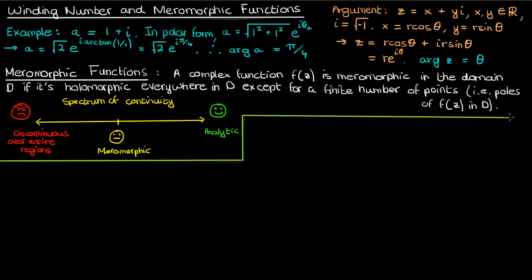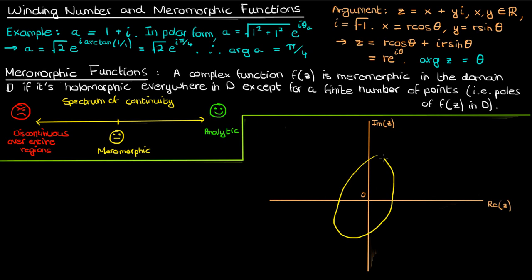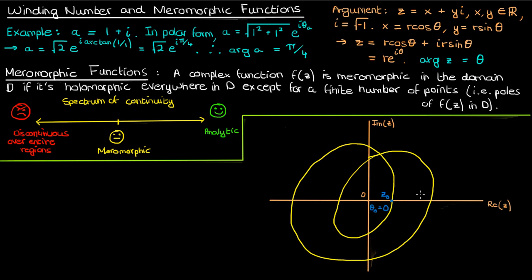The next concept I'd like to discuss is the winding number. Say I have a closed contour c in the complex plane that looks something like this. By closed I mean that the contour completely encloses an area. How many times does this contour go around the origin? Well just from looking at it you can tell it goes around twice, but let's explain why. We'll start over here on this right end of the contour which I'll call z0. The angle z0 makes with respect to the positive real axis is 0, so we basically start with an argument of 0.